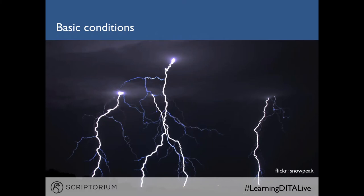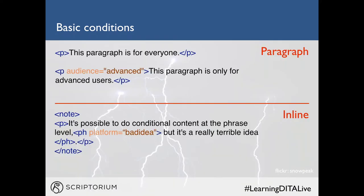Now let's look at how conditions differ from keys and how we set up conditional information in DITA. You assign attributes to an element to make it conditional. Looking at a code example: at the paragraph level, you have a 'p' element with the attribute 'audience equals advanced.' Because this is marked with audience equals advanced, this paragraph is for an advanced audience, and if you're publishing for beginner-level users you would want to filter that paragraph out.